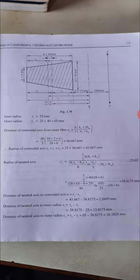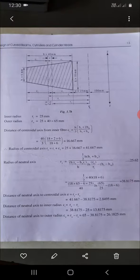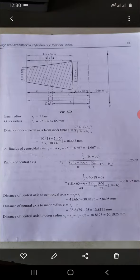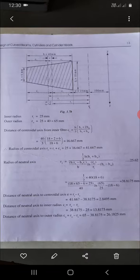RI is given as 25mm, RO is 25 plus the height H, that is 40, equals 65mm. Now to find RN and RC for a trapezium, you have to use the formula.